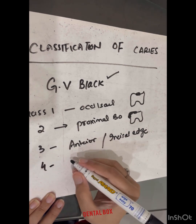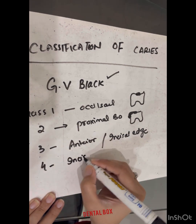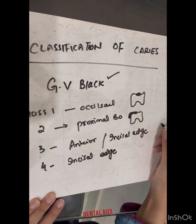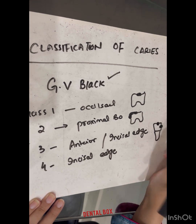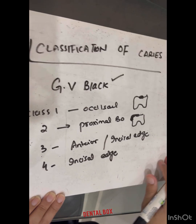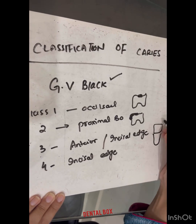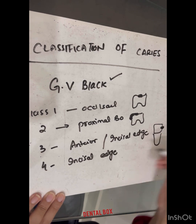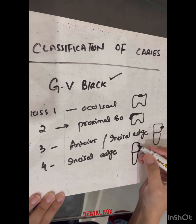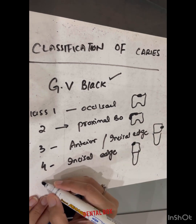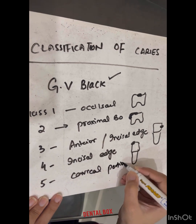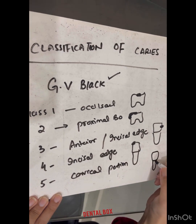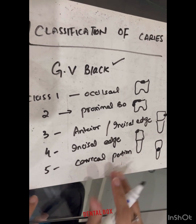Class 4 involves the anterior teeth with the incisal edge involved. So if this is the anterior tooth, class 3 does not include the incisal edge, while class 4 does include the incisal edge. Class 5 involves the cervical portion of the tooth.